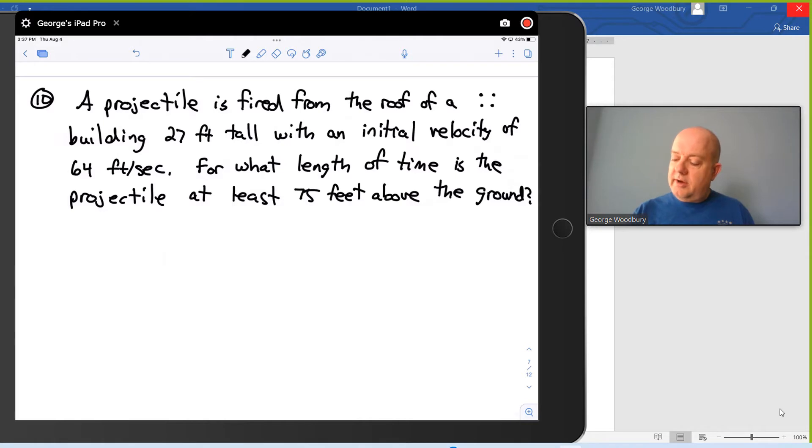We have an equation for the height of the projectile s after t seconds, and that's s equals negative 16t squared plus v sub zero times t, that's your initial velocity times the time, plus s sub zero, which is the starting height. Now here we know the starting height is 27, that's the height of the building, and the initial velocity we're told is 64 feet per second, that's v sub zero. So our expression for the height is negative 16t squared plus 64t plus 27.